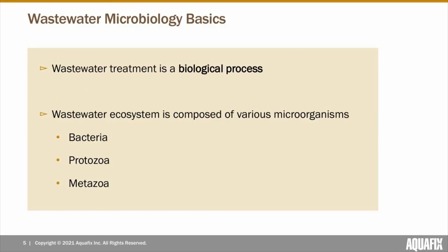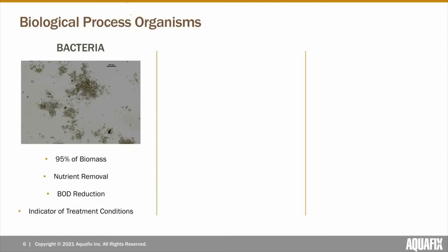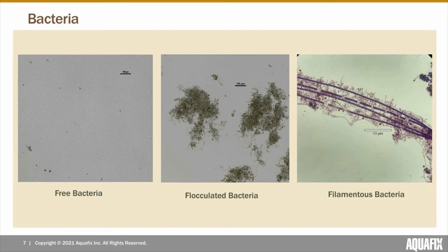It's important to remember that wastewater treatment is a biological process composed of a plethora of different microorganisms. These organisms can be broken down into three different groups: bacteria, protozoa, and metazoa. The first group, bacteria, are the most abundant and will contribute to 95% of your total biomass. Bacteria are vital in the wastewater treatment process as they are primarily responsible for nutrient removal, BOD reduction, and can be indicators of treatment conditions. Bacteria can be further broken down into free bacteria, flocculated bacteria, and filamentous bacteria.